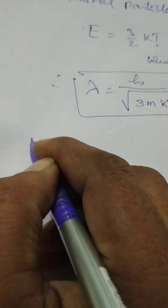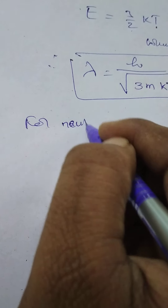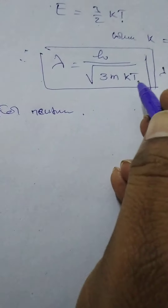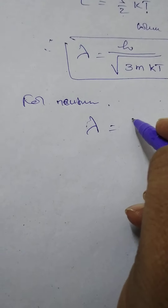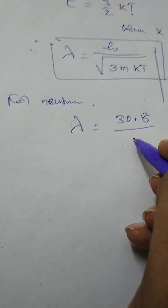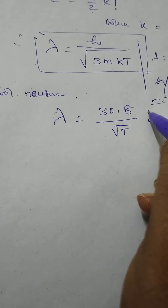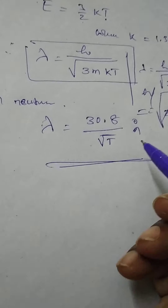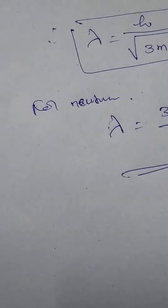For a neutron, in terms of absolute temperature, its de Broglie wavelength is equal to nearly 30.8 by root T angstrom units, where T is equal to absolute temperature.